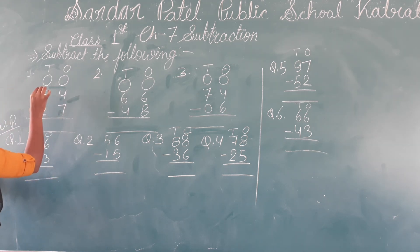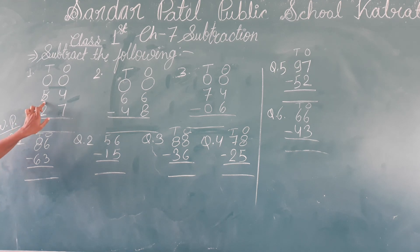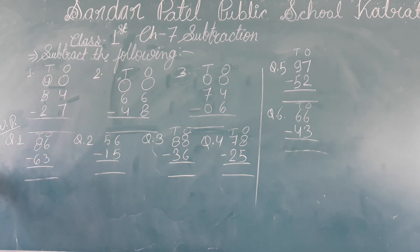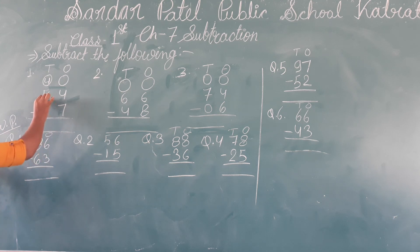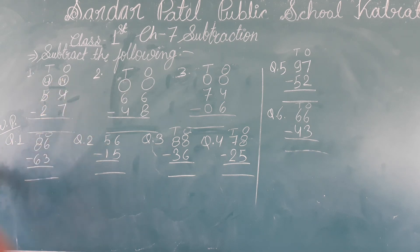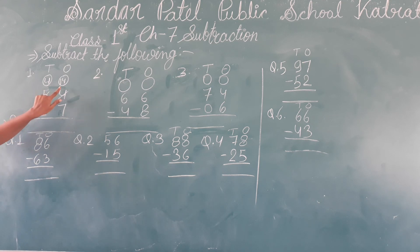So what do we do first? The tens place — we will take 1 minus from it. So we take 1 from 5, we cut the 5 and write the circle. Now we write what we have borrowed. How much will we add here? We will add 10. So in 4 we will add 10 — so how much will it be? 14. We cut the original 4 and now we will subtract.